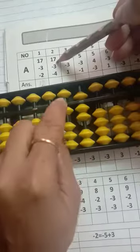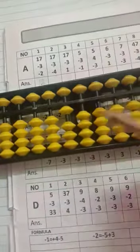Second one, we have 17 minus 3, then minus 4. Answer is 10.